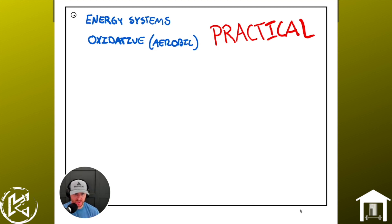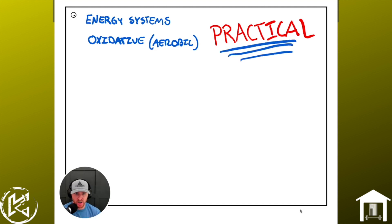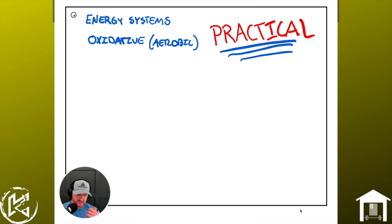I want to go over what I'm going to do and not going to do. Today is going to be a practical explanation of using energy systems, because when I see other content created around energy systems it's very in-the-weeds and sciencey — and let's be real, completely useless for either an athlete or coach looking to implement it. So if you want a bioenergetics lesson that talks about how the aerobic pathway primarily uses fat oxidation as its fuel substrate, go to a different video. Those things aren't actually going to help you.